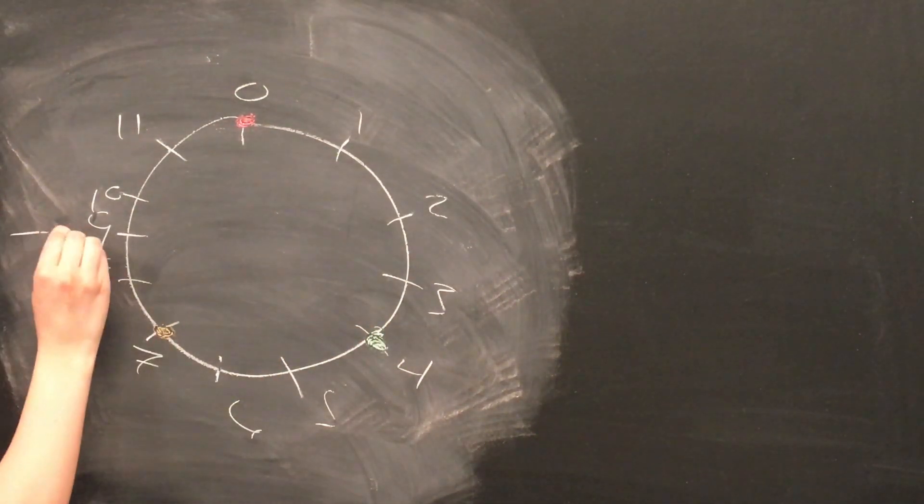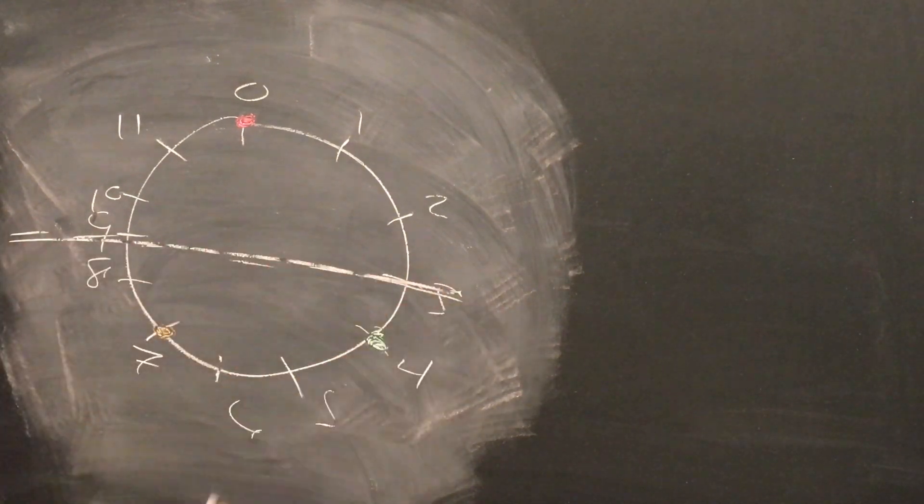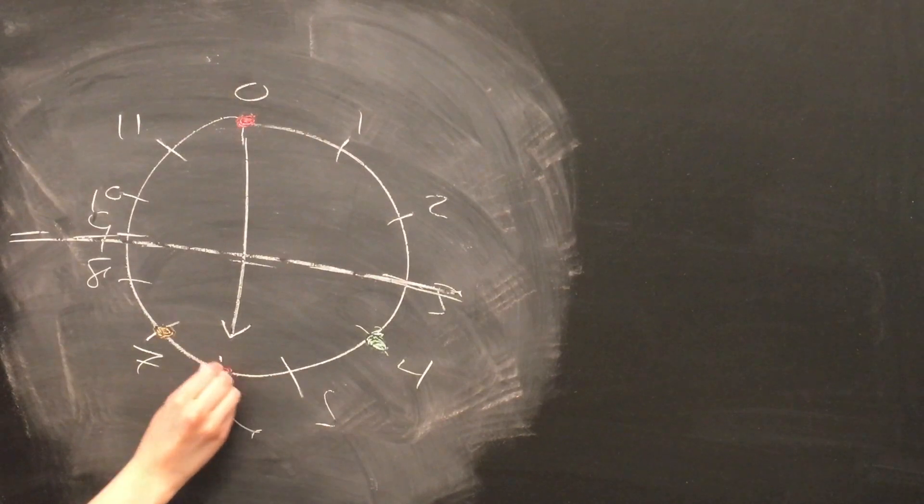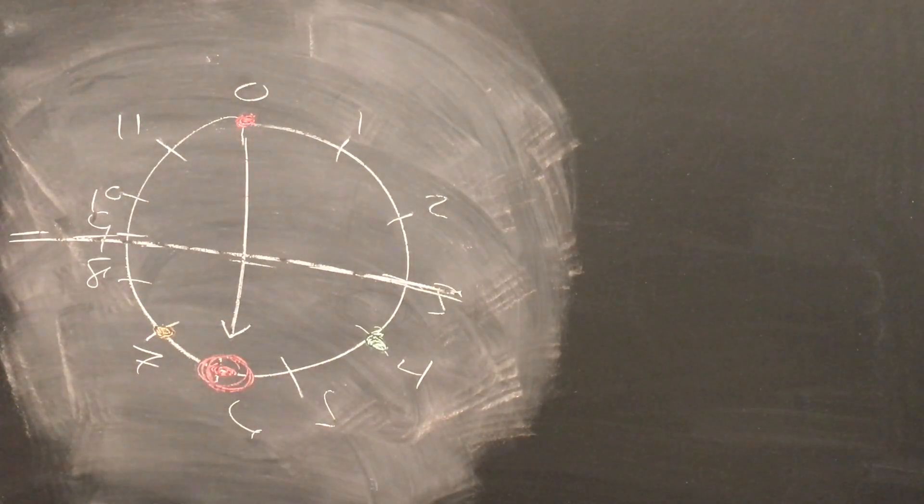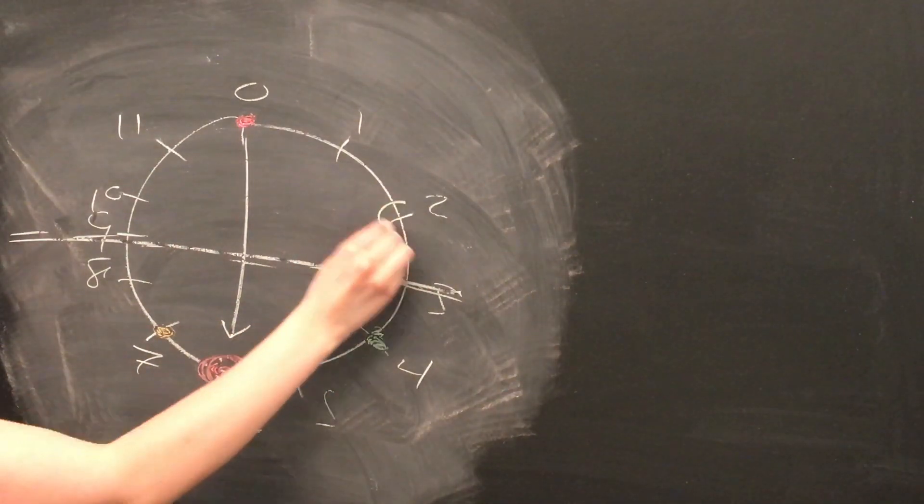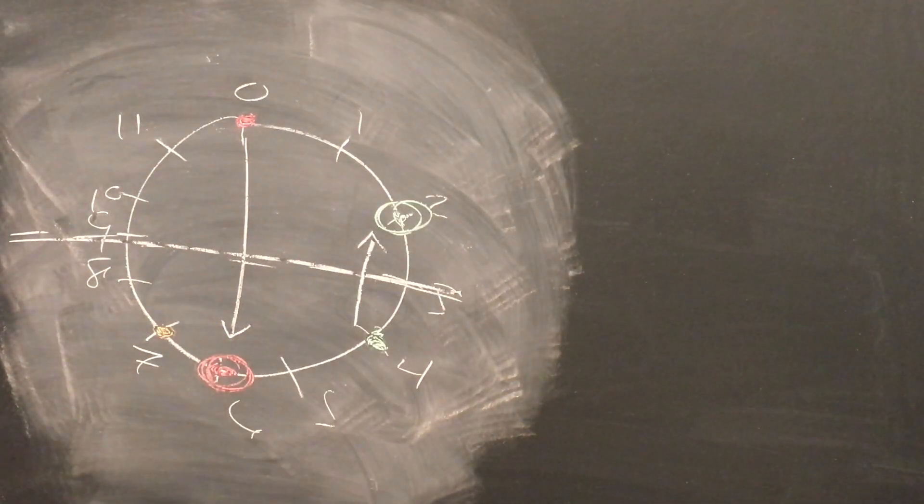So we have, once again, a C major triad, and we want to invert it across this axis of inversion between 3 and 9. We simply reflect each of the notes over the line. So here, the 0 reflects to 6, 4 reflects to 2, and the 7 reflects to 11. Any note that starts on the axis of inversion just stays where it is throughout the process.